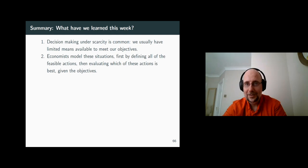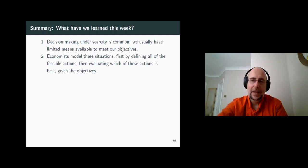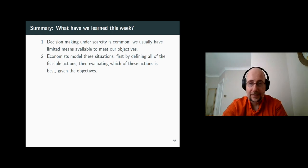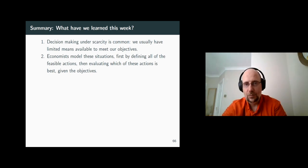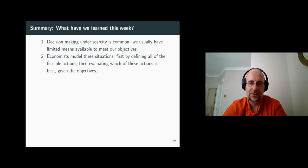We called it consumer equilibrium. The equilibrium point is what we predict the individual will choose, given their constraints — their means — and their preferences.